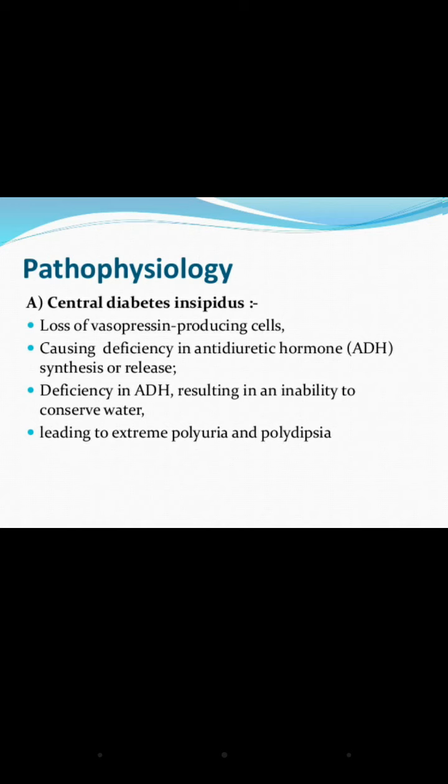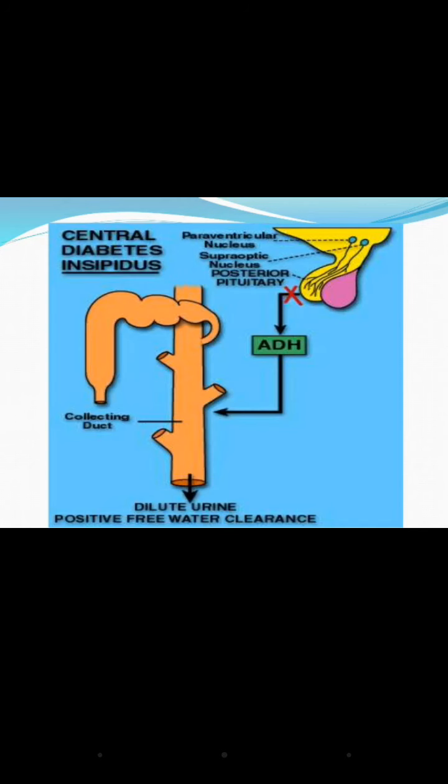This deficiency in ADH synthesis or release results in an inability to conserve water, leading to extreme polyuria. To compensate, the body produces extreme polydipsia. In the diagram, a red cross mark from the posterior pituitary indicates that ADH is not being released or synthesized.